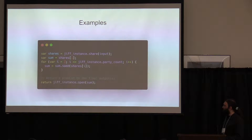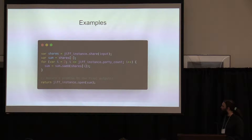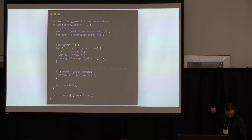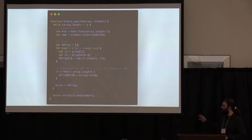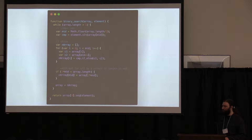The code you write in JIFF is similar to the SIMD — Single Instruction Multiple Dataset — paradigm. There's a simple example that sums numbers and opens the results. 'Open' here is the same as 'declassify' if you're familiar with that term. Here's a more complicated example with binary search. It looks like JavaScript and is JavaScript — it runs in the browser, on Node.js, or on a mobile phone. The only difference is you use JIFF primitives like dot-if-underscore-else, which is an oblivious statement. Unfortunately, JavaScript doesn't support operator overloading, otherwise it would look exactly like regular code.